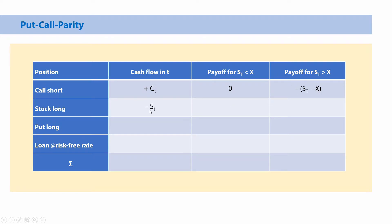Buying the stock means a cash outflow in the amount of the current stock price, and at time T the stock will be worth whatever it will be worth. The put long means buying the put, so that is a cash outflow. Only if the stock price is below the exercise price will the put be worth something, and that is X minus S. If the stock price is above the exercise price, then the put will not be exercised and its value will be zero.